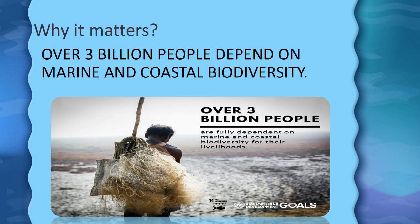And why it matters. Over 3 billion people depend on marine and coastal biodiversity. Normally we pay too much attention to life on land, which is where humans live. But what about the sea creatures? We pay too little attention to life below water and to the sea creatures. These people are fully dependent on marine and coastal biodiversity for their livelihoods — for example, fishers and fishmongers in fishing villages who depend on their jobs.